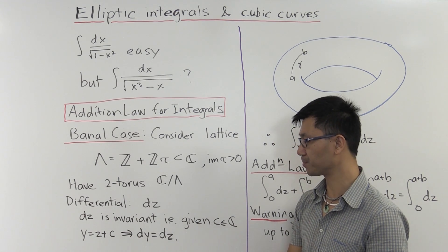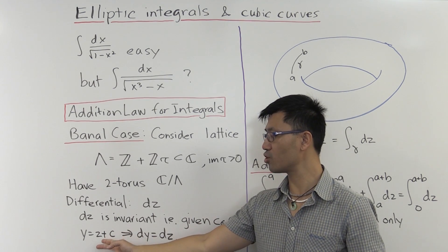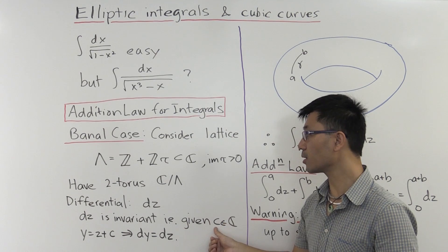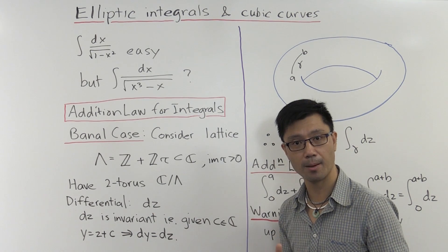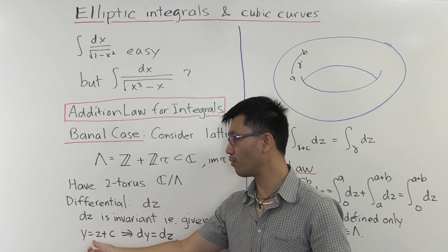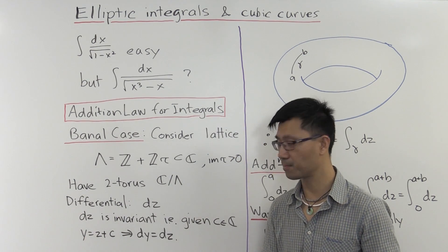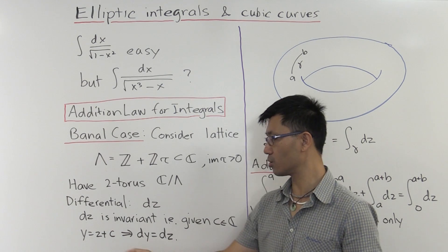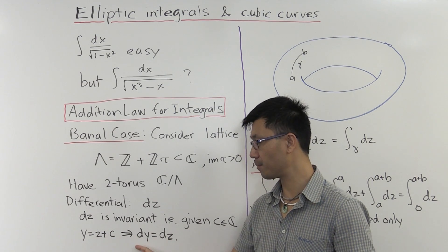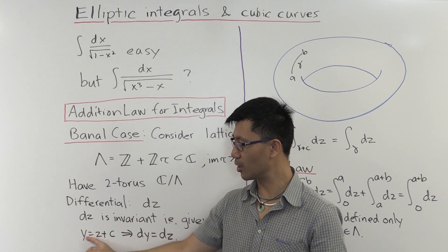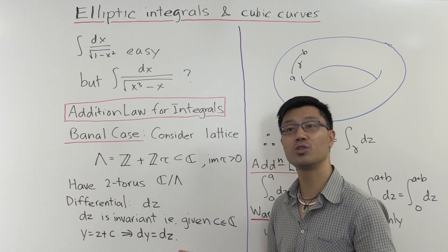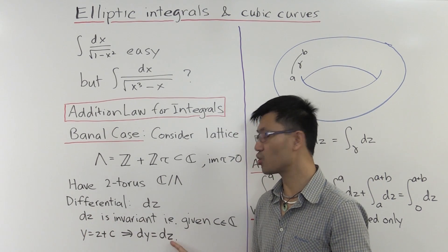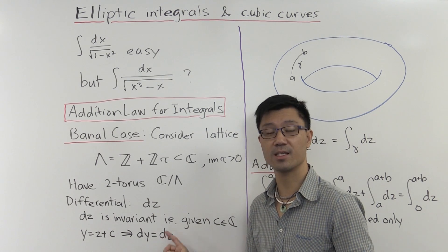So for example, we can do a change of variable. Instead of looking at z, which gives us our dz, we can pick a constant inside C or C mod Λ that we translate by. And that gives us a new function y = z + c. And then the translation of this dz by c, so to speak, is just dy. And of course, if you compute the differential of dy, since this is linear, it's just equal to dz. So translating this dz by a constant c doesn't change it. And in that sense, this dz is invariant.